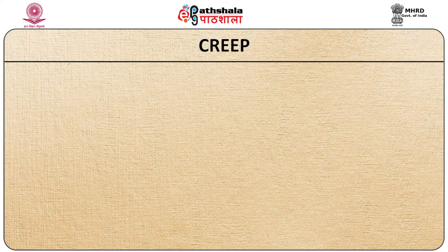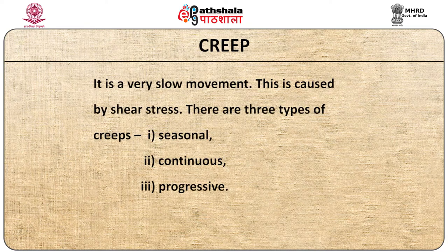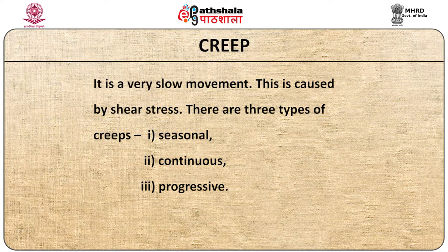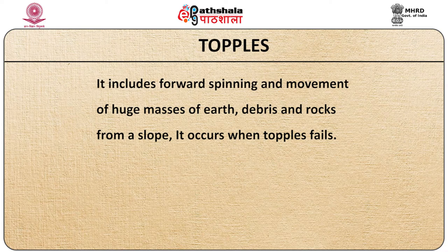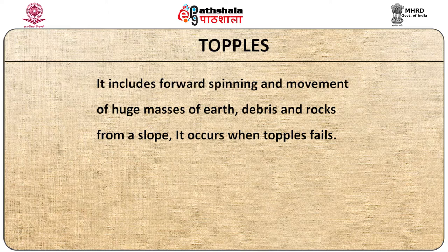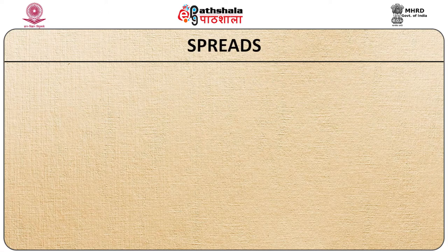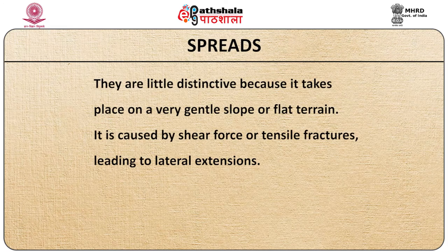Creep is very slow movement caused by shear stress. There are three types of creep: seasonal, continuous and progressive. Topples include forward spinning and movement of huge masses of earth, debris and rock from a slope, occurring when toppling failure takes place. Spreads are distinctive because they take place on very gentle slopes or flat terrain, caused by shear force or tensile fractures leading to lateral extensions.